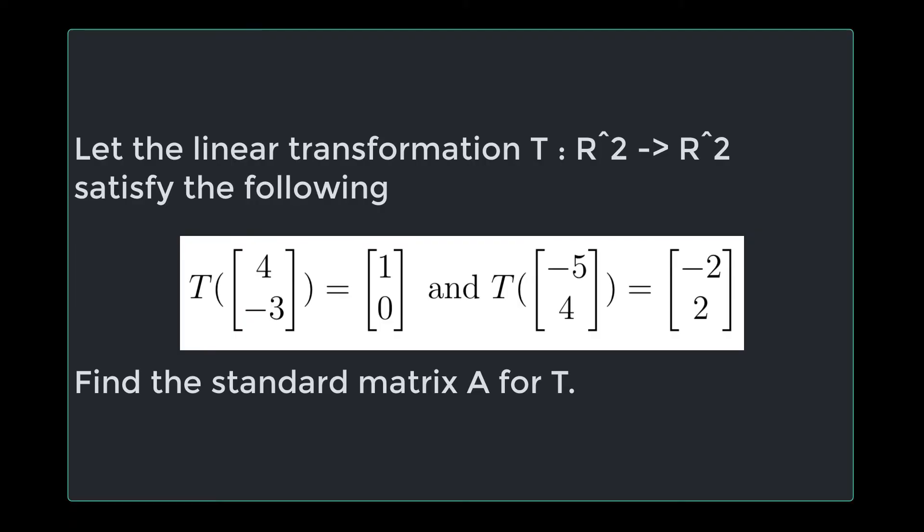The question we're working on today is: let the linear transformation T from R2 to R2 satisfy the following. T of (4, -3) equals (1, 0), and T of (-5, 4) equals (-2, 2). Find the standard matrix A for T.